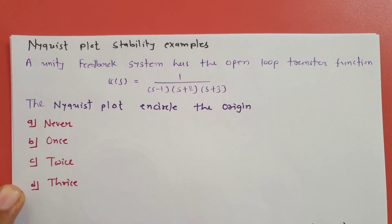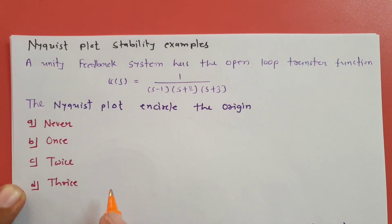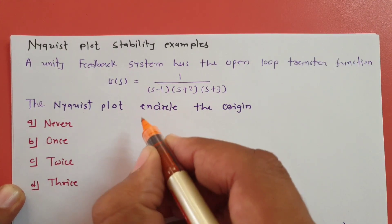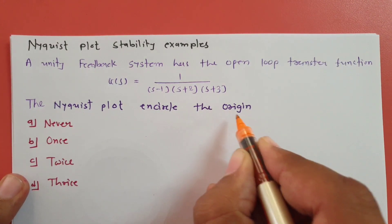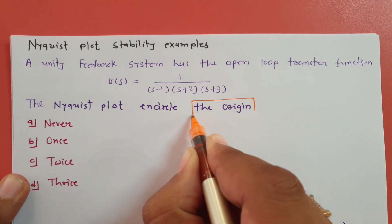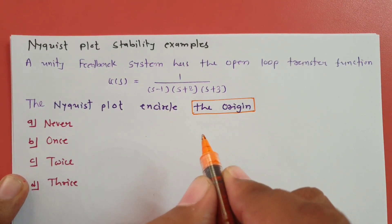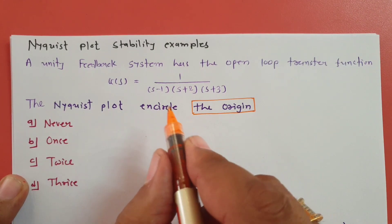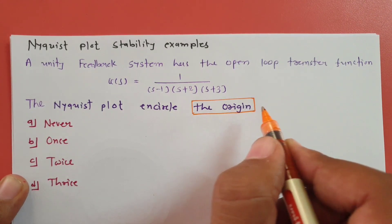Students make huge mistakes when solving this example. The reason is the question asks which point the Nyquist plot encircles — and here it specifies the origin point, not the critical point −1+j0. The question is based on encirclement around the origin, not on stability.